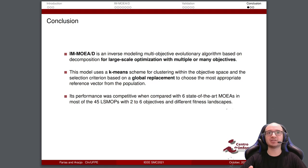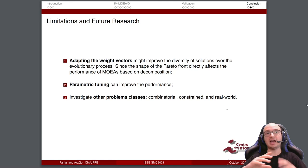Future research. First, adapting the weight vectors might improve the diversity of solutions over the evolutionary process, since the shape of the Pareto front directly affects the performance of MOEAs based on decomposition. Secondly, parametric tuning can improve the performance too. And third, investigate other problem classes like combinatorial, constrained, and real-world. Thank you very much.